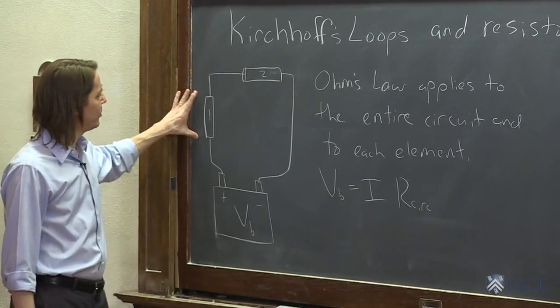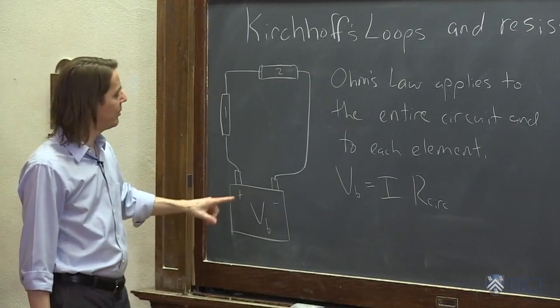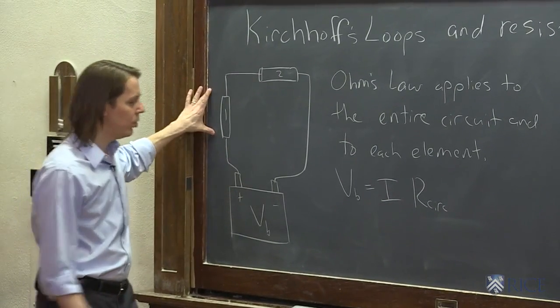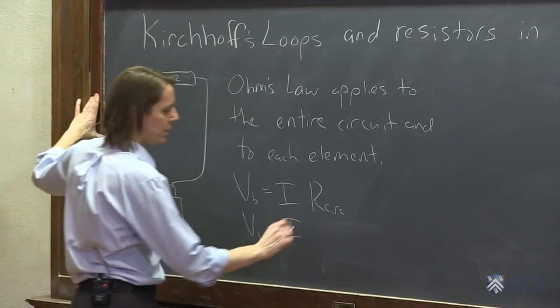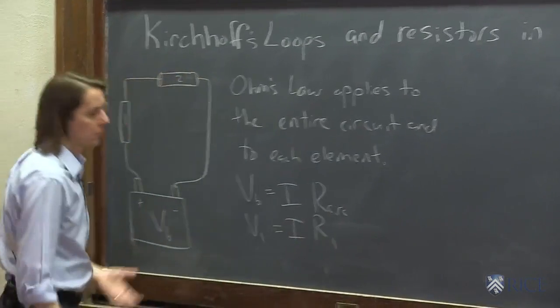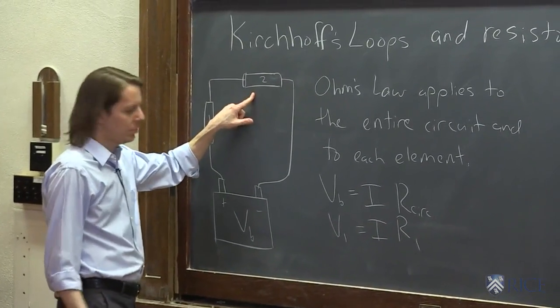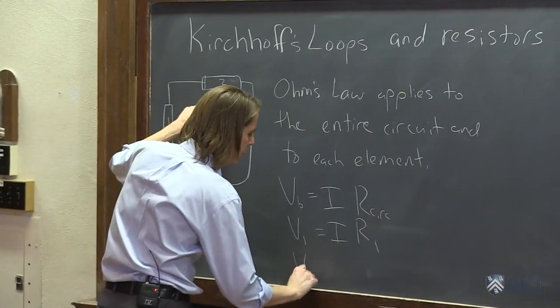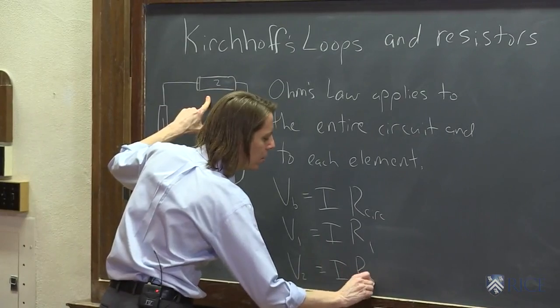We can also apply V equals IR to this first resistor. We can say, well, some of this voltage is going to go across one. So we can call that V1 equals the same current times R1. Why not? Well, guess what? We can apply Ohm's Law to two. We can say V2 equals IR2.